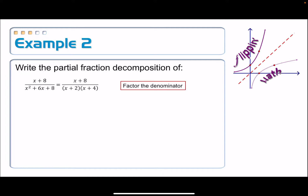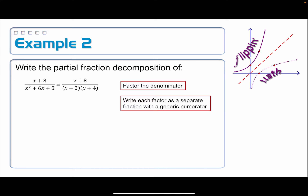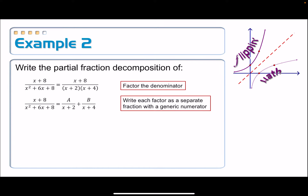Now we're going to rewrite this as two separate fractions where the denominator on the first one must be x plus 2, and the denominator on the second one must be x plus 4. That's exactly where this thing came from — it was the product of those two denominators. We have no idea what the two numerators are, so we write them with generic numerators: A over x plus 2, plus B over x plus 4.